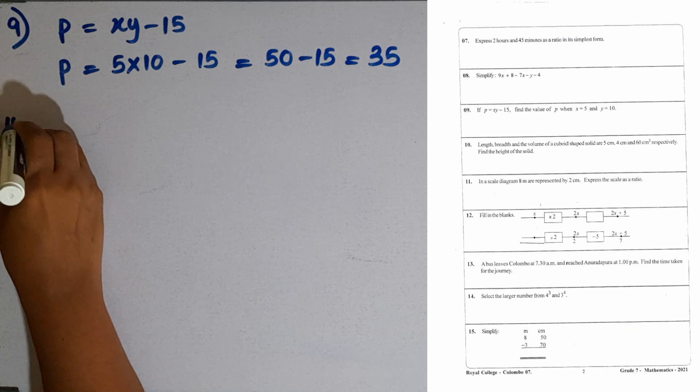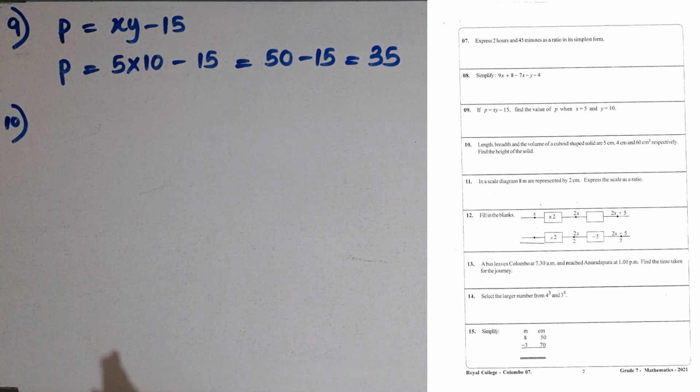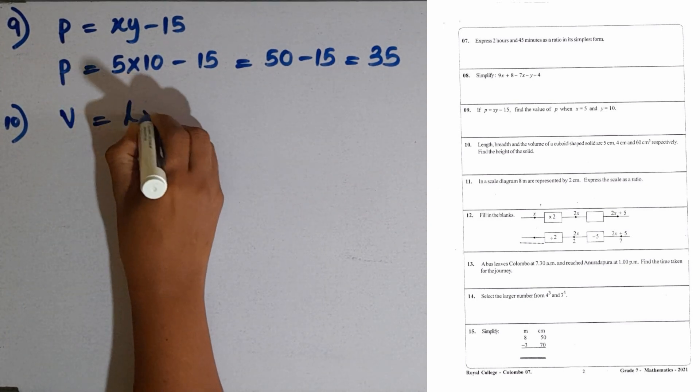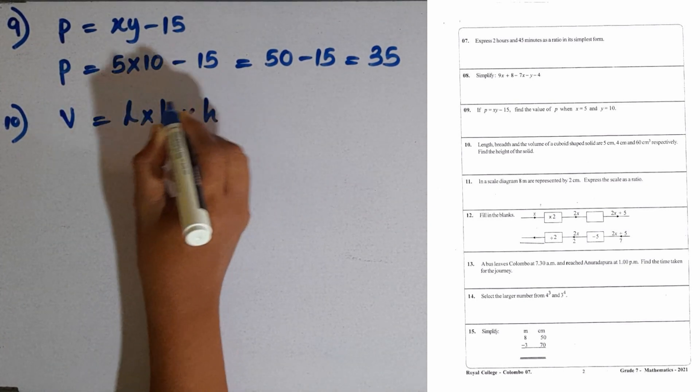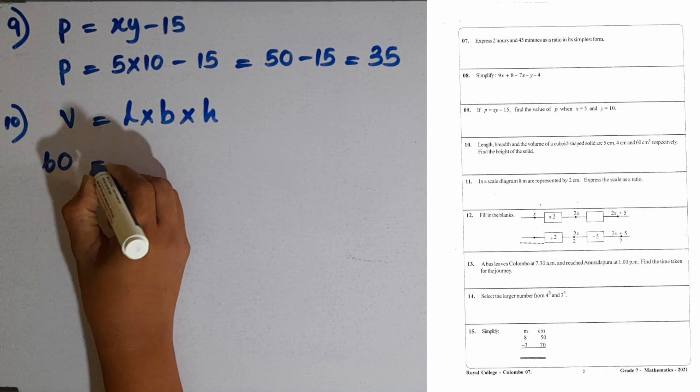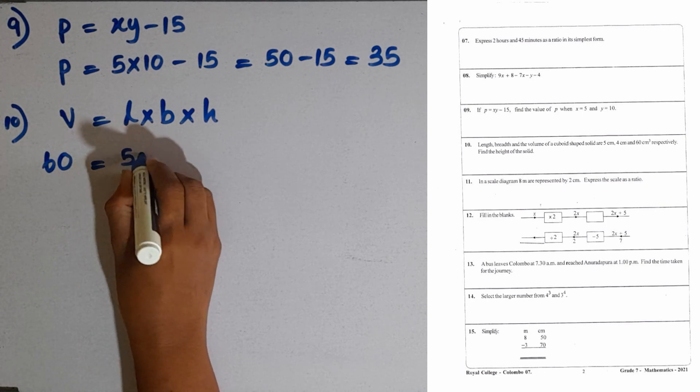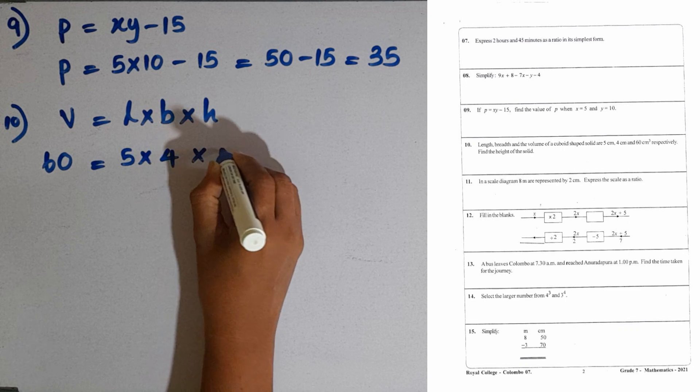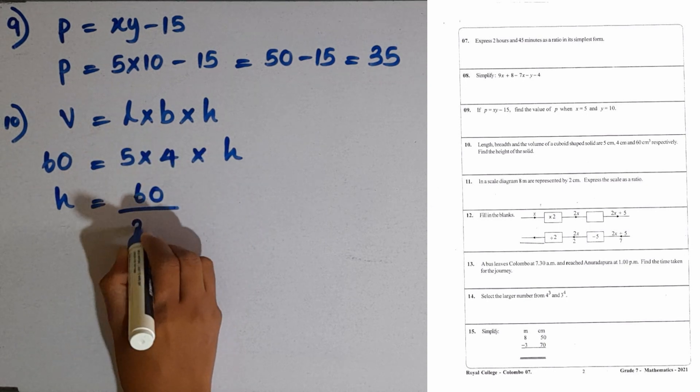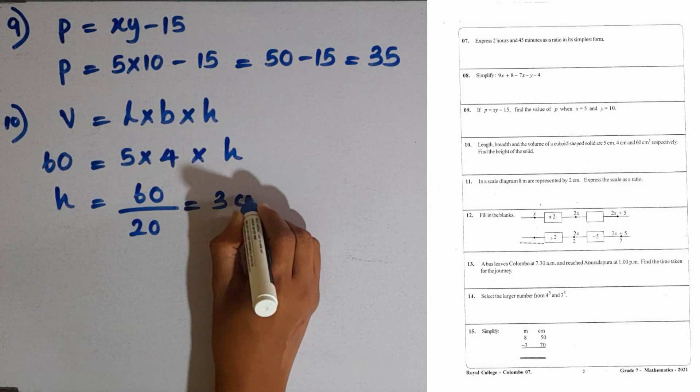Then question number 10. Length, breadth and the volume of a cuboid shaped solid are 5 cm, 4 cm and 60 cubic cm respectively. Find the height of the solid. Volume is equal to length multiplied by breadth multiplied by height. Volume is given as 60 cubic cm. Then, length is 5 cm, breadth is 4 cm. We are going to find the height. H equal to 60 divided by 5 times 4, which is 20. Then, 3 cm is the answer.